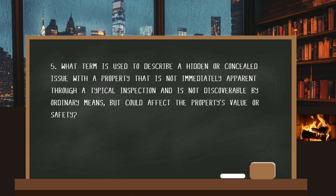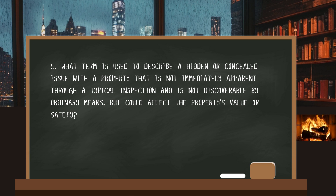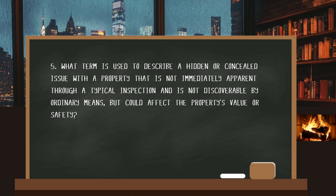Question five. What term is used to describe a hidden or concealed issue with a property that is not immediately apparent through a typical inspection and is not discoverable by ordinary means, but could affect the property's value or safety? The answer: a latent defect.